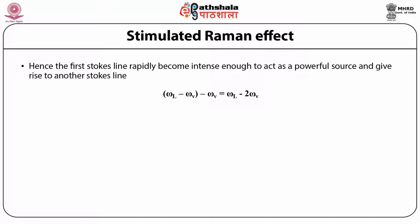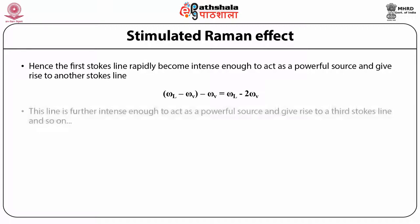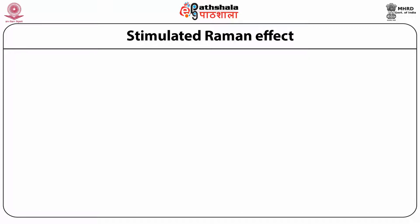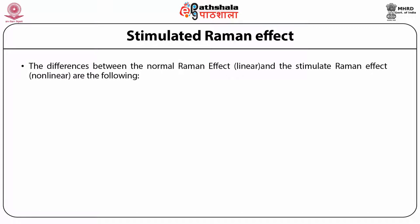The second Stokes line is at omega_L minus omega_nu minus omega_nu = omega_L minus 2*omega_nu. This line is further intense enough to give rise to a third Stokes line, and so on. However, the generation of an anti-Stokes line does not arise as a downward transition from a populated upper state. The differences between normal Raman effect (linear) and stimulated Raman effect (nonlinear) are as follows.